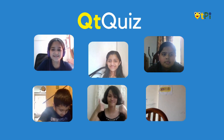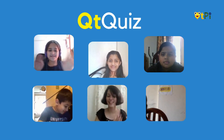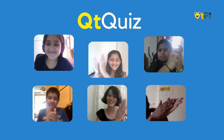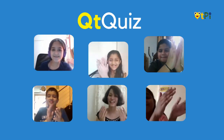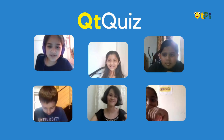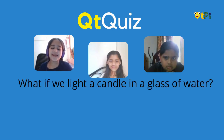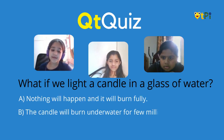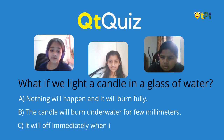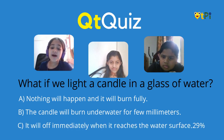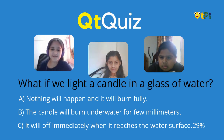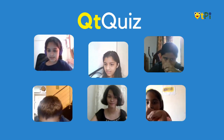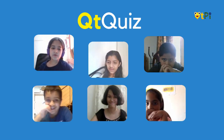I am your cutie quiz mistress — you guys can clap hands for her! Let's reveal the question: What if we light a candle in a glass of water? A — nothing will happen and it will burn fully; B — the candle will burn underwater for a few millimeters; or C — it will go off immediately when it reaches the water surface. Johanna, can you publish the polling results? Three people chose C and two people chose B.